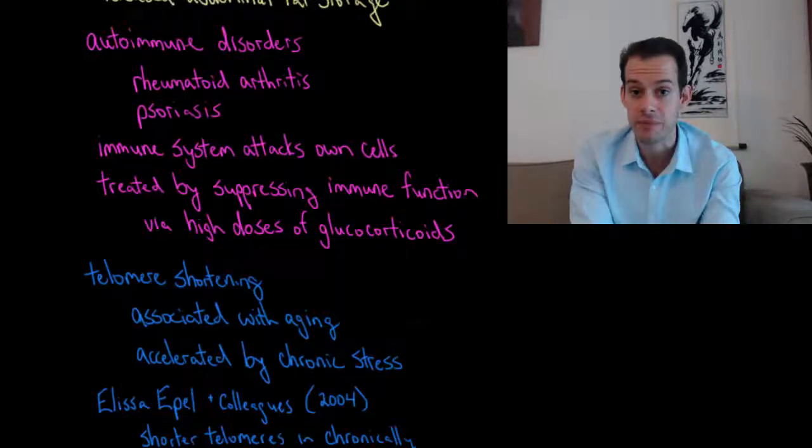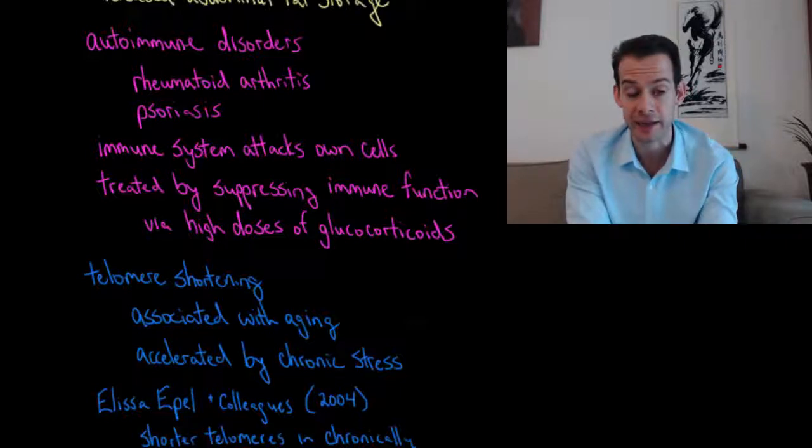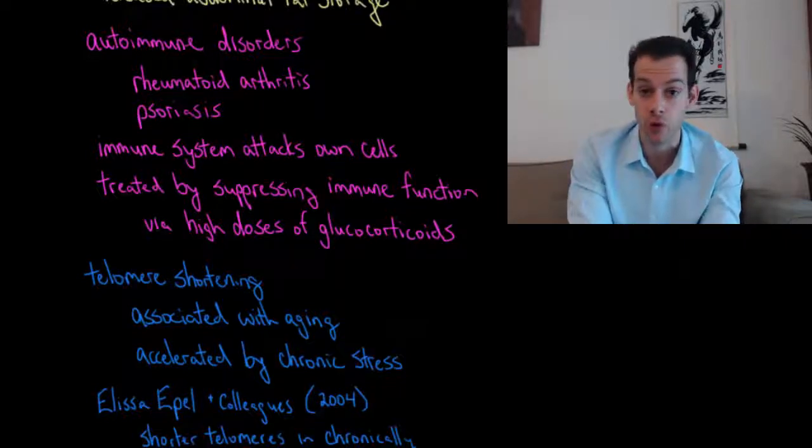Glucocorticoids can also be used to reduce the immune system's response to organ transplants. So the body tries to reject these invading cells of the transplanted organ. And one way to reduce that rejection is to use glucocorticoids.